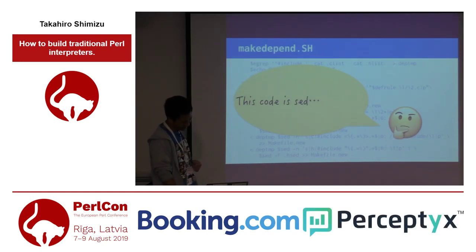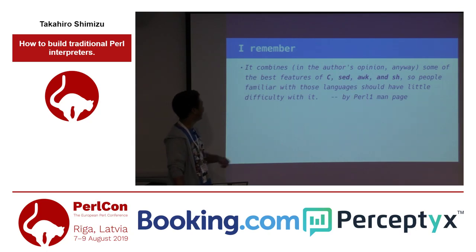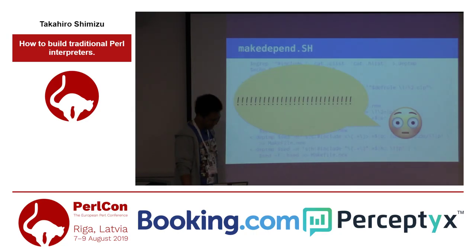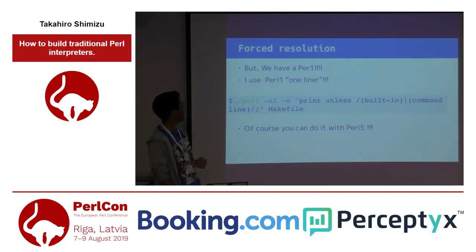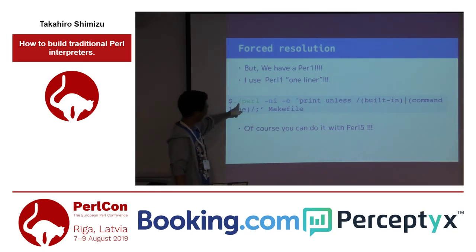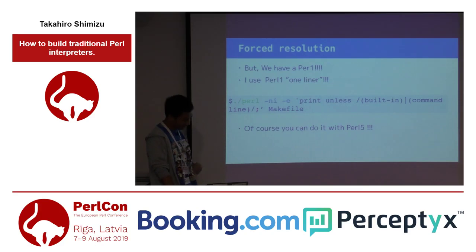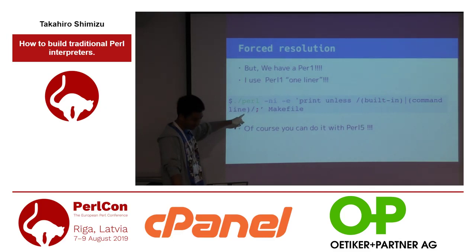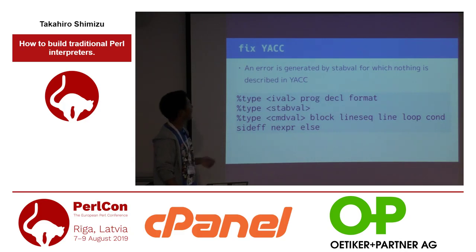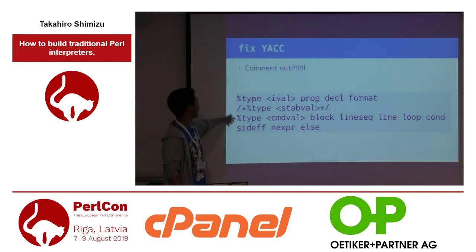That header file gets written to the makefile after make depend. To fix the generated command line, I open make depend.sh. But make depend.sh usually uses set -e or set -x, and I could not read that code. So I gave up fixing it there. I remembered this is the Perl 1 man page — she said 'orc and sh.' So I use a Perl 1 one-liner to modify the makefile. Of course you can also do it with Perl 5. The key point of the one-liner is the semicolon — Perl 1 one-liners will fail without semicolons.